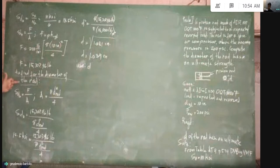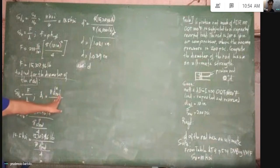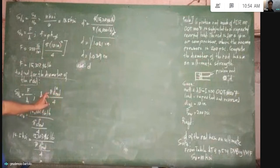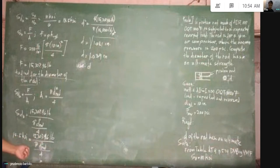For the diameter of the rod, we set the design stress based on ultimate equal to F over A, where the area of the piston rod equals pi D-squared over 4. Substituting all values, we have 18.5 KSI equal to 15,707.96 pounds over pi D-squared over 4. Solving, the diameter equals 1.039 inches.